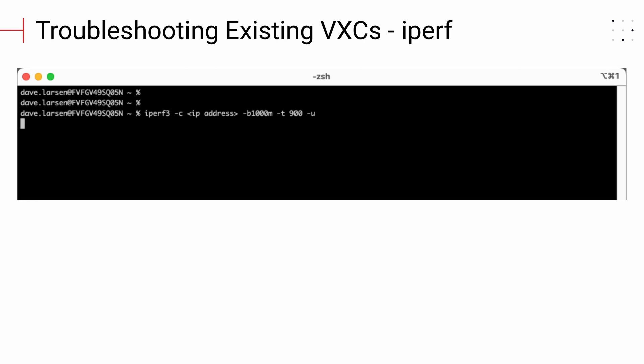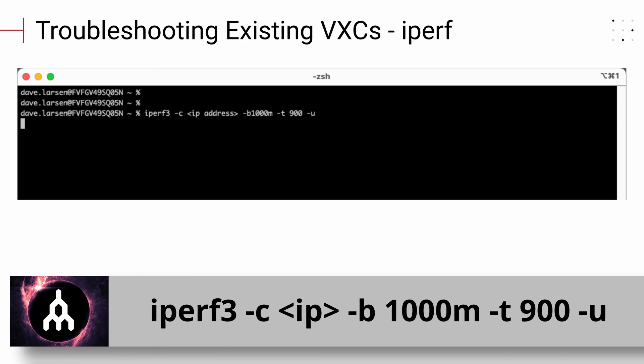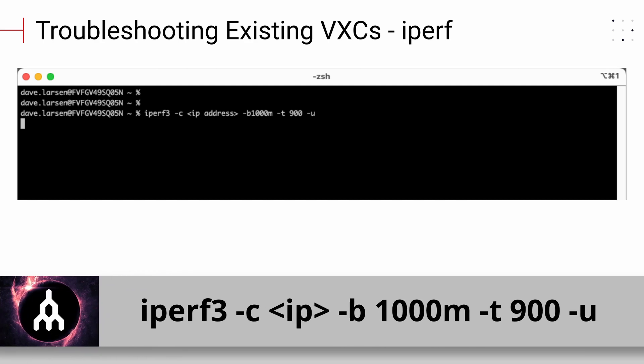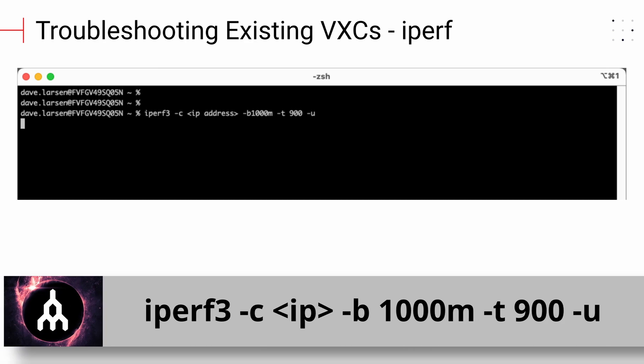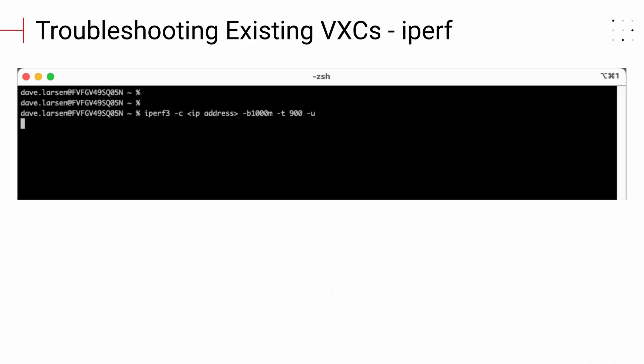The iPerf command allows the user to set various parameters that can be used for testing a network. This is the iPerf command with the options that Megaport recommends: iPerf -C [IPAddress] -B 1000M -T 900 -U. Megaport recommends performing a 15-minute test on each side — the A client and B end server, then the B end client and A end server — for a total of 30 minutes of testing, and approximately 10 to 15 minutes between each test. This test must be run using UDP as the data streams must be used to measure throughput between the two ends of the connection without the overhead of TCP negotiation, congestion avoidance, and windowing.